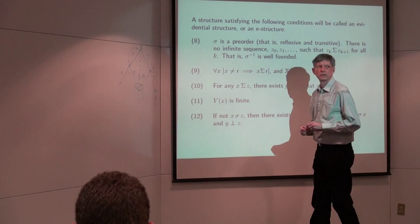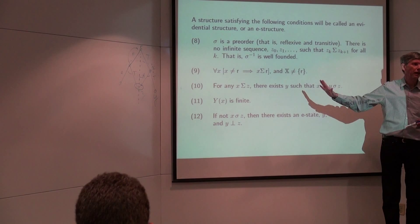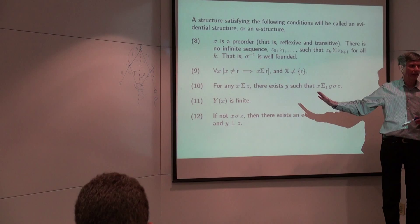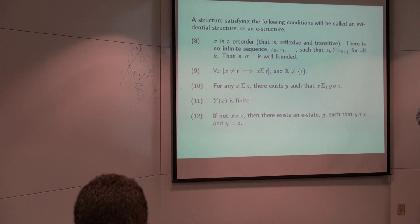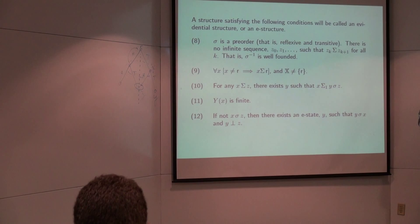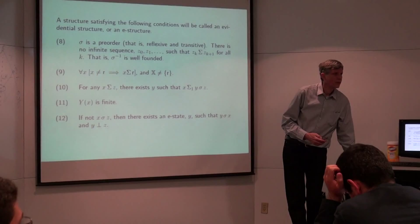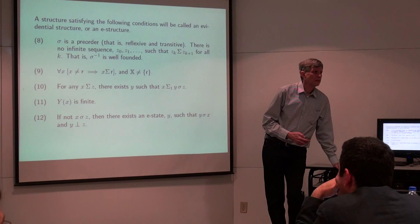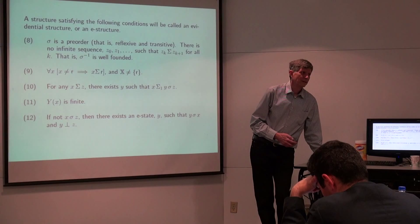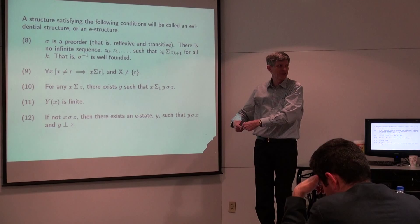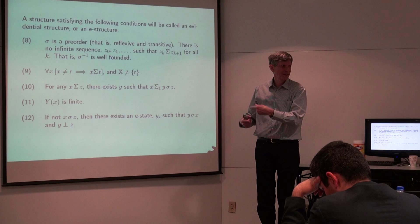The tree structure crucially specifies the order in which you learn. Without the tree structure, you might not be able to distinguish the orders — typically there will be multiple learning paths leading to an evidential state. The person in that evidential state will not know how the evidence was acquired. So the tree, in a way, is observability of history. More than that — it's also about what kinds of things you can see.